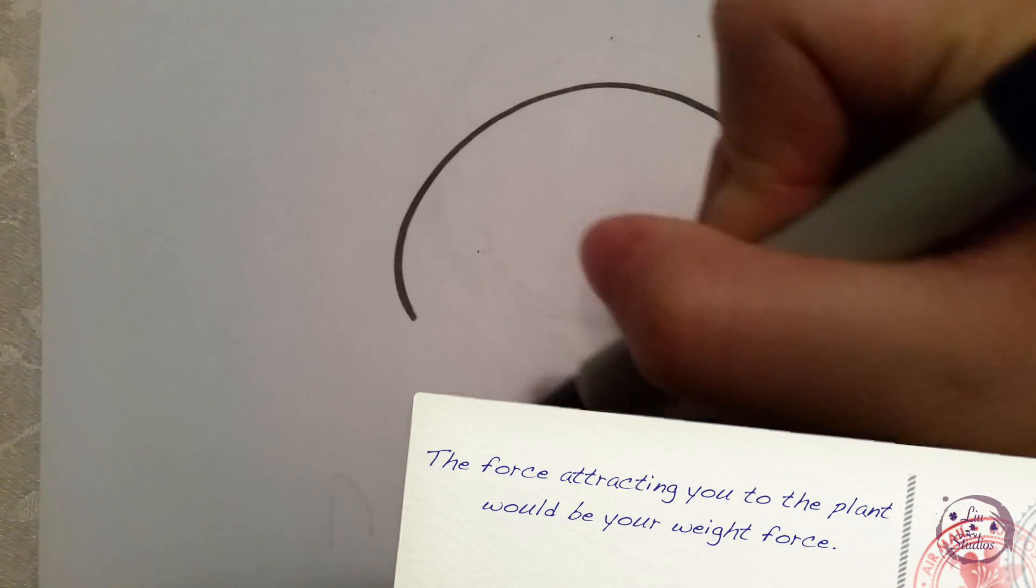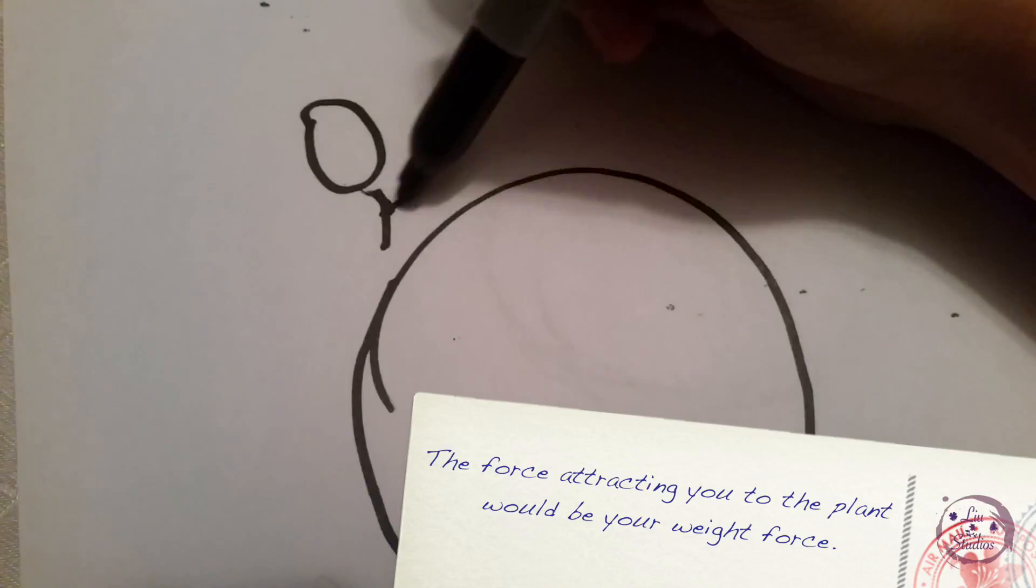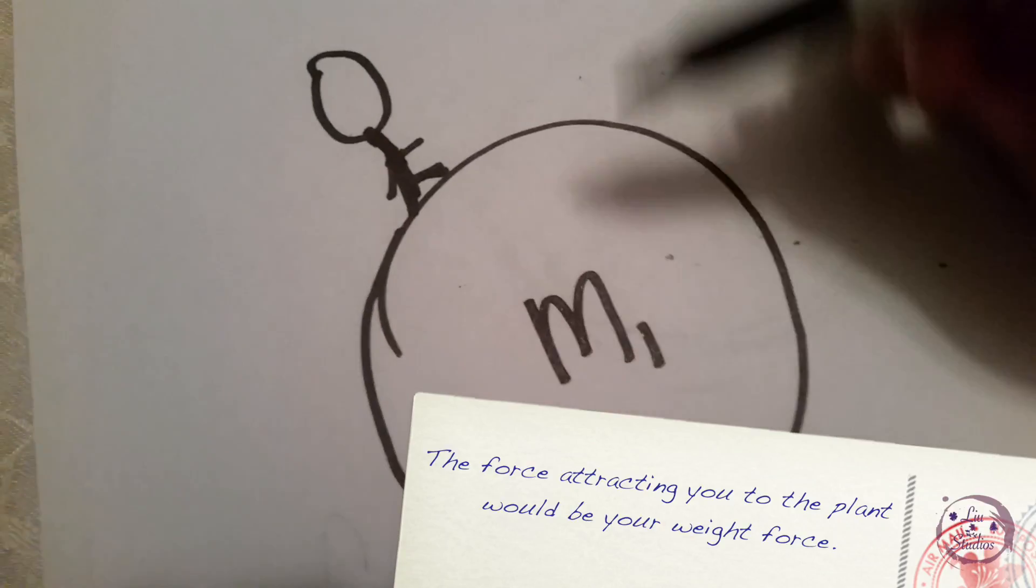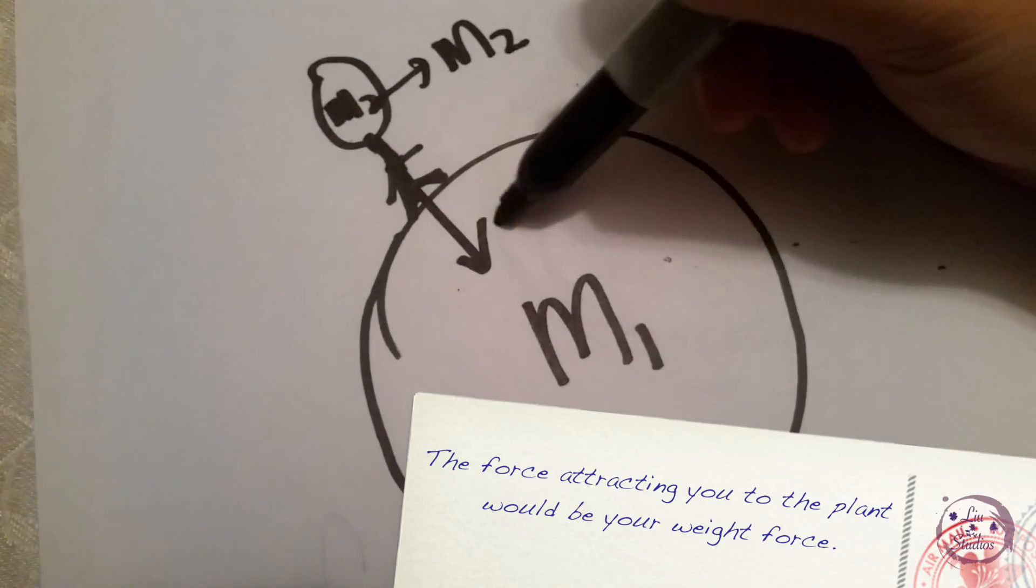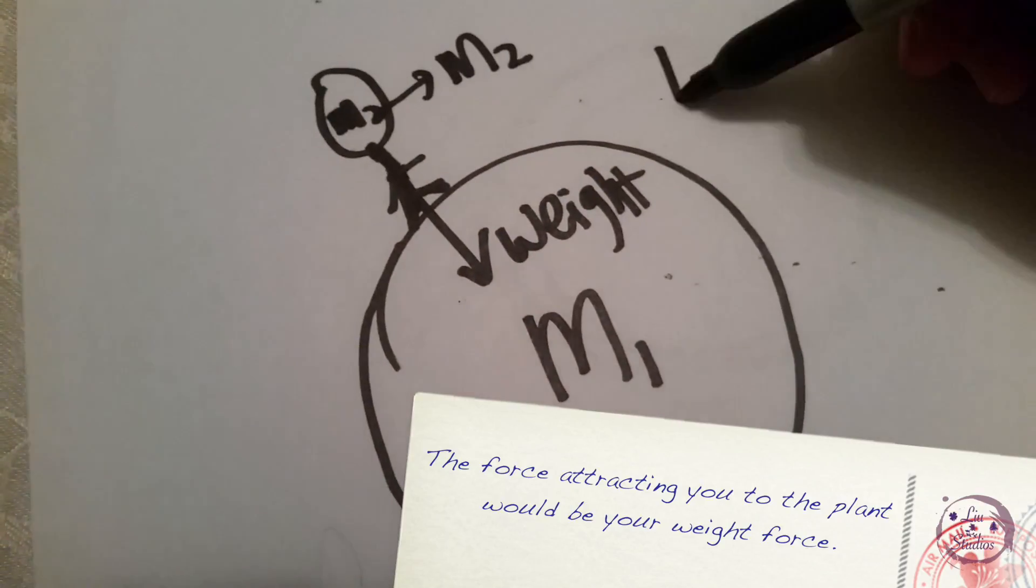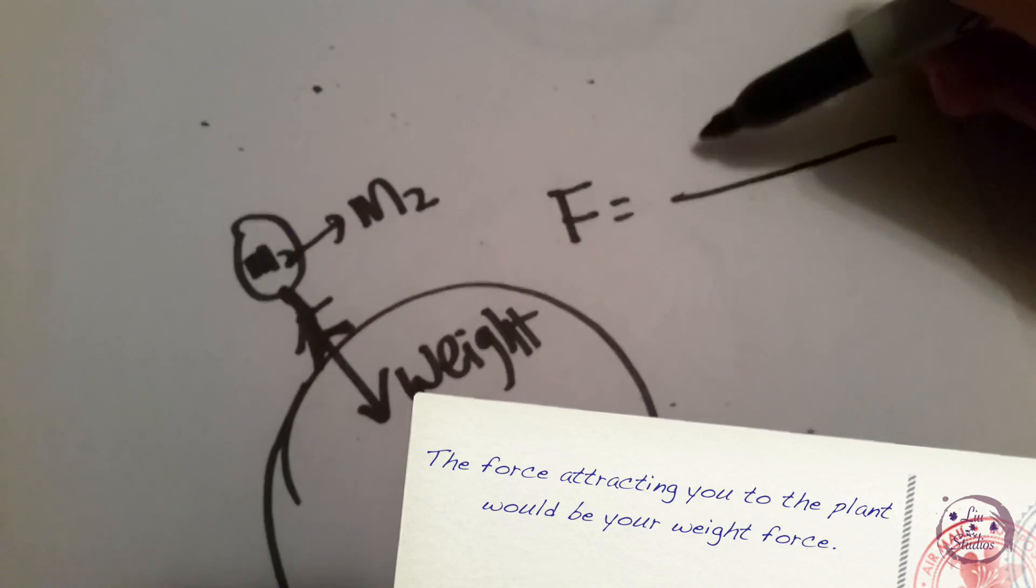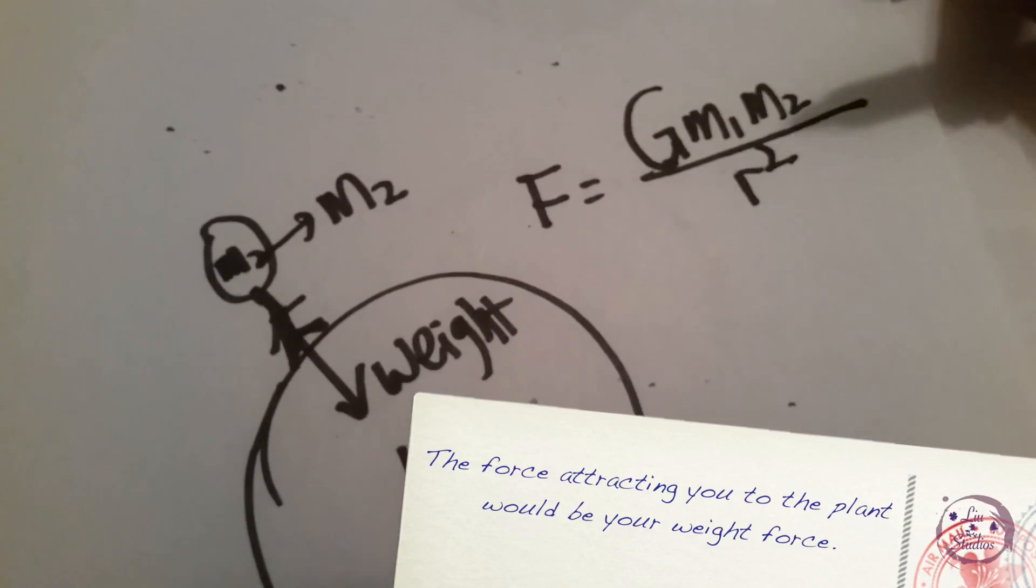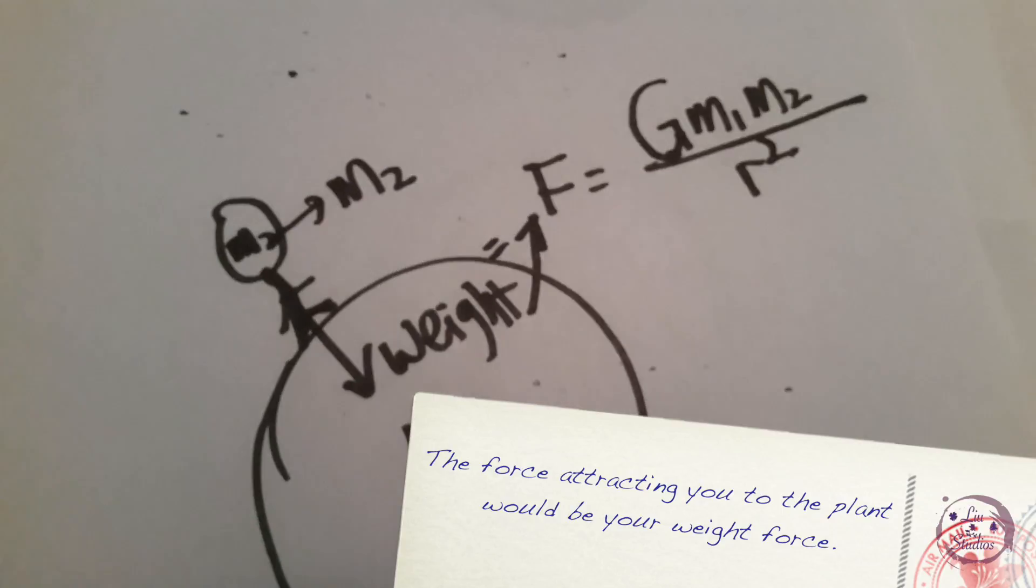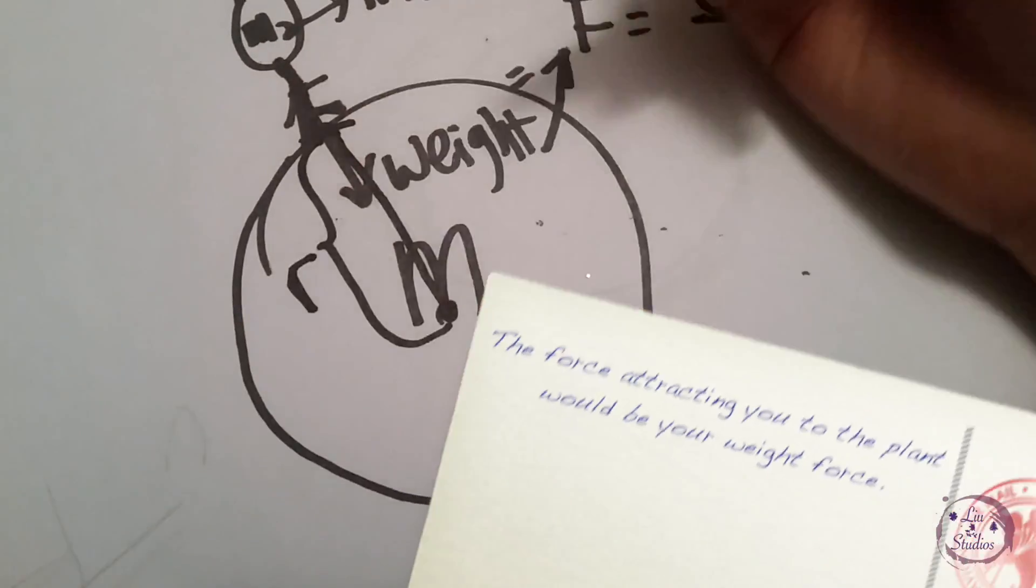Now, imagine you on a planet with mass M1 and you are mass M2. The force exerted by the planet on you would be the weight force. This would be equal to the gravitational force, which is attracting you and the planet together. The radius would be from your height to the planet's center.